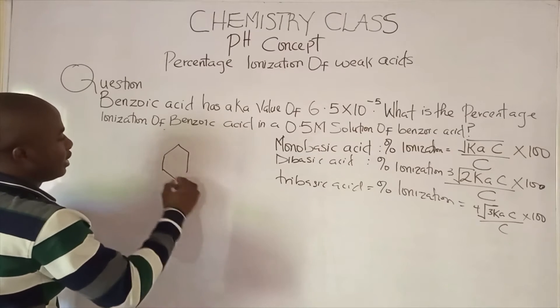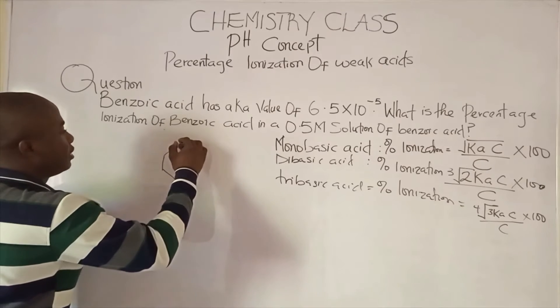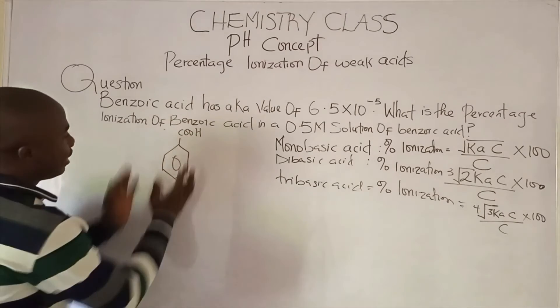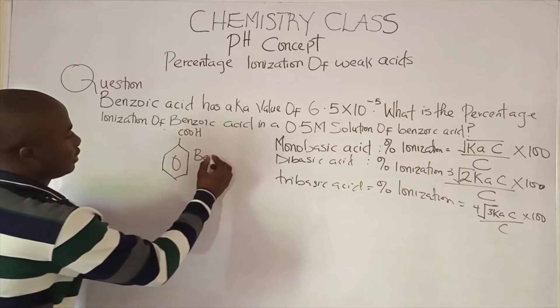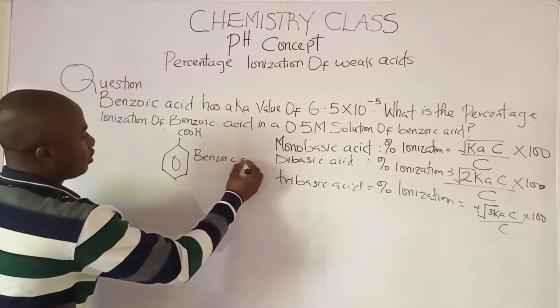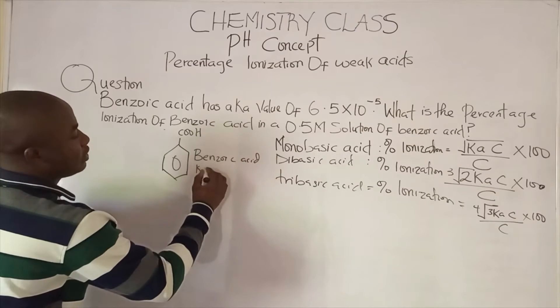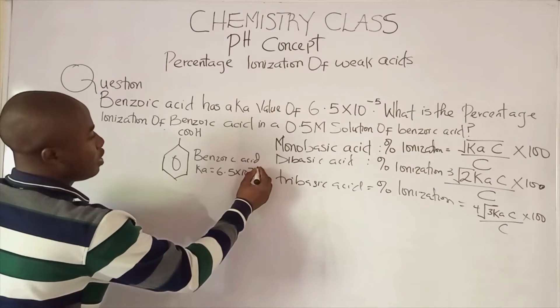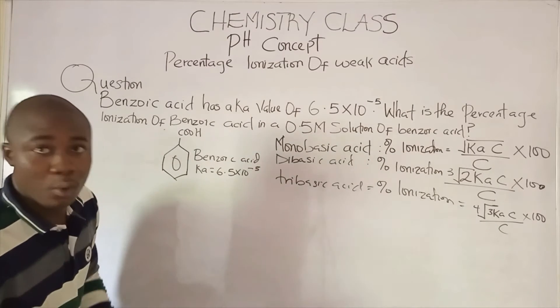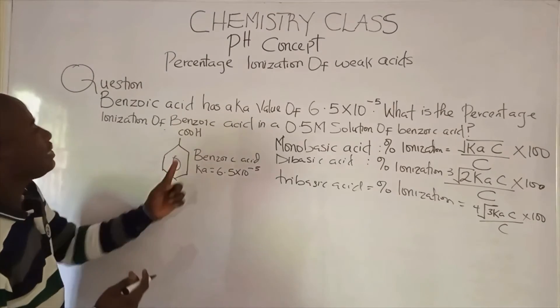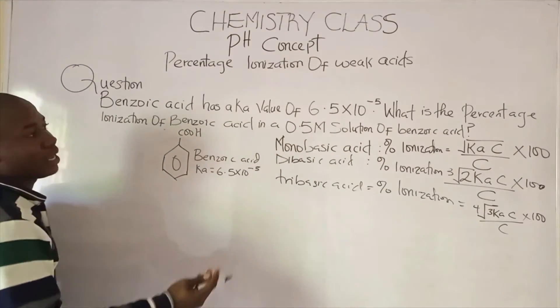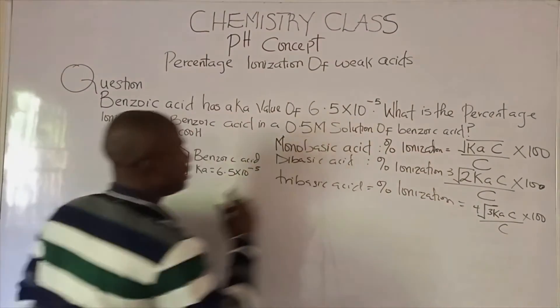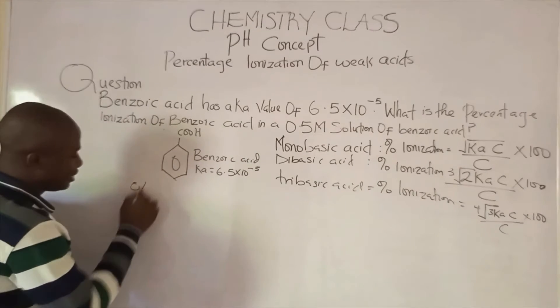This is the structure of benzoic acid. It is an organic acid with the carboxylic functional group. The Ka in this question is given to be 6.5 times 10 to the minus 5. It is a weak mono-basic acid, so to calculate the percentage of ionization we use this formula.